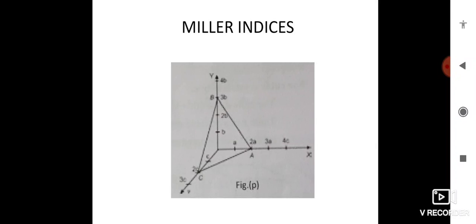That is Miller indices. Suppose if a plane intercepts P along X, Q along Y, R along Z, these are the intercepts. PA, QB, RC. Then reciprocals of these intercepts, that is 1 by PA, 1 by QB, 1 by RC.